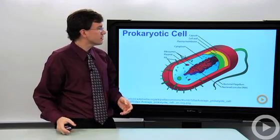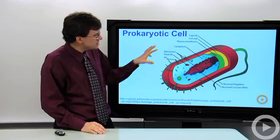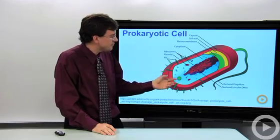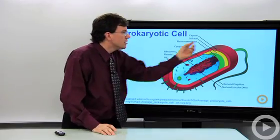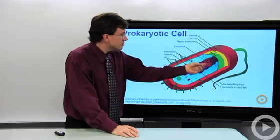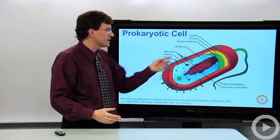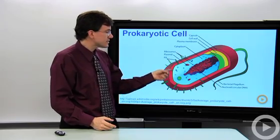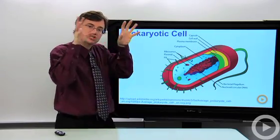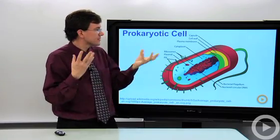Let's take a look at the structure of a prokaryotic or bacterial cell. Here is a kind of bacteria, and you can see the DNA floating around inside the cytoplasm of the cell. They will have a cell membrane, but that is often wrapped in an external wall, sometimes called a capsule or cell wall.